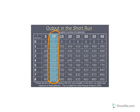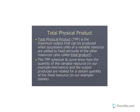In the textbook appendix to chapter seven regarding production, they refer to output as total physical product (TPP). Total physical product is defined as the maximum output that can be produced when successive units of a variable resource are added to a fixed amount of another resource — sometimes called total product. I generally just use the term 'output,' so don't be confused when you see total physical product in your reading — they mean the same thing.